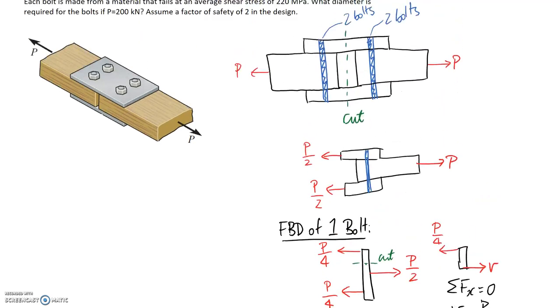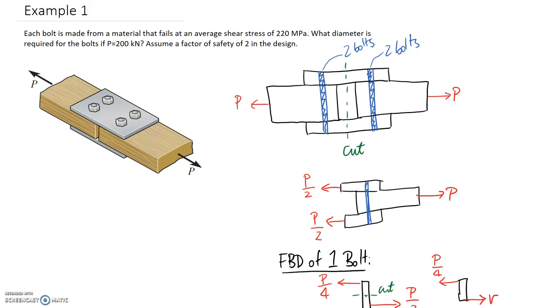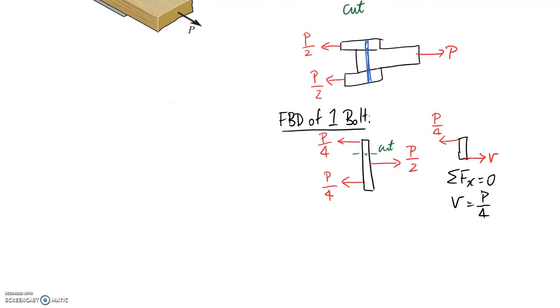In fact, we're told what P is for the question. It tells us that we've got a force of 200 kilonewtons, so V is going to be equal to 200 divided by 4, which is 50.